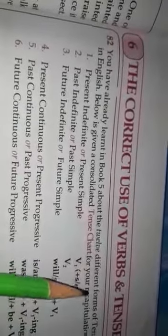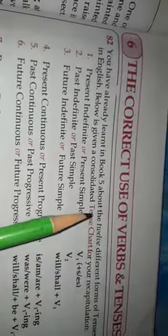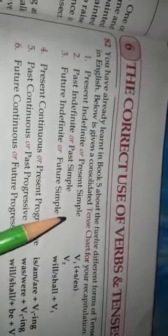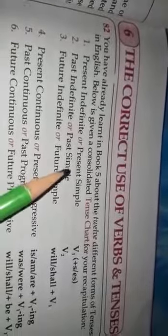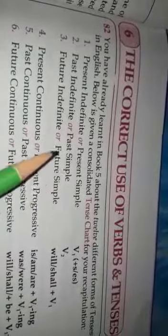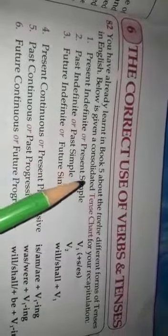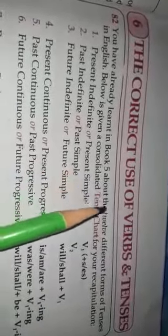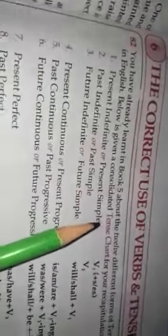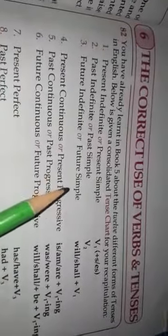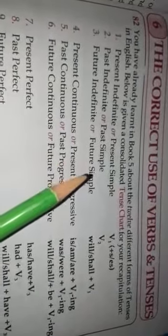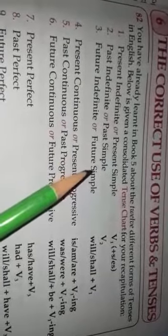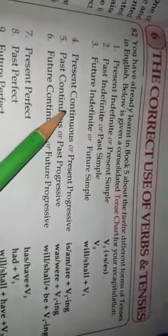Every tense has 4 forms. So if there are 4 forms in 3 tenses, then 3 times 4 equals 12 — there are 12 forms. So 12 verb forms are given in this book.